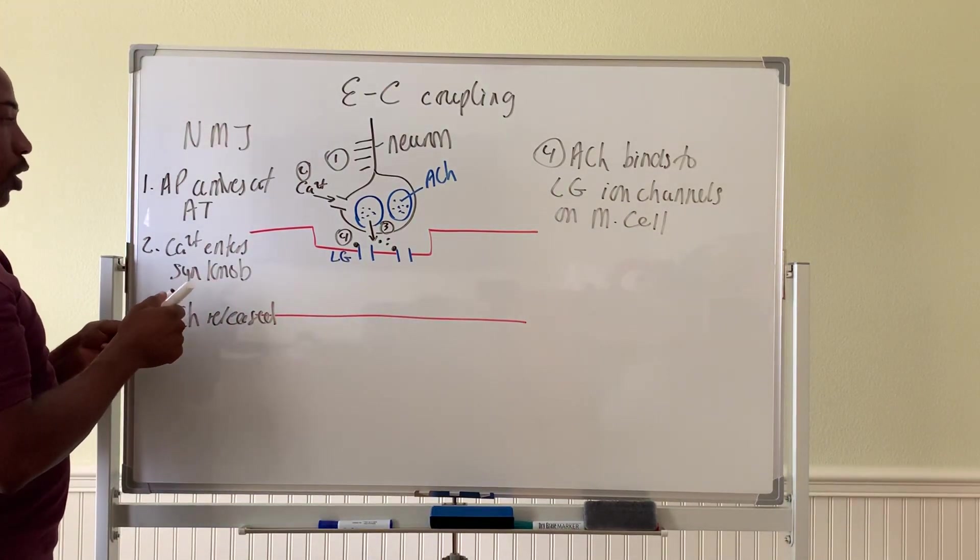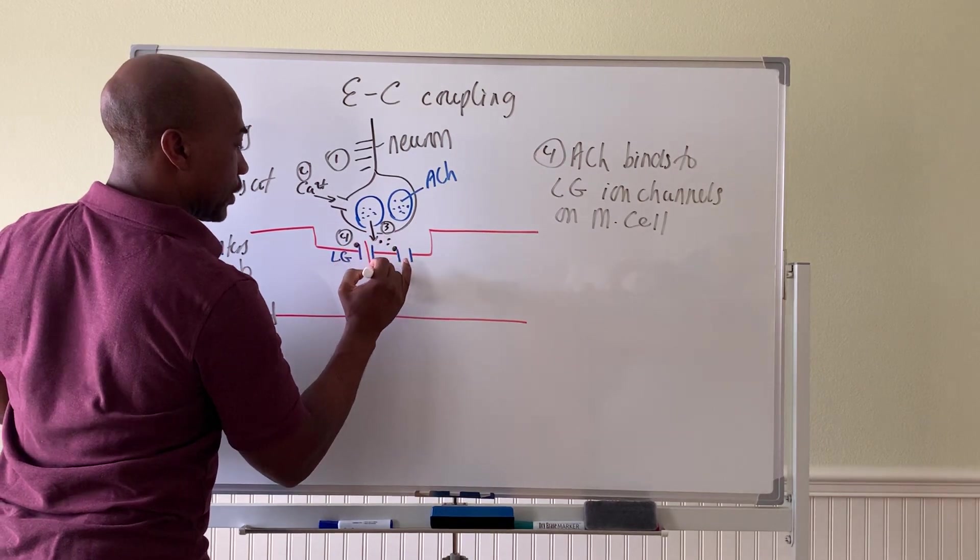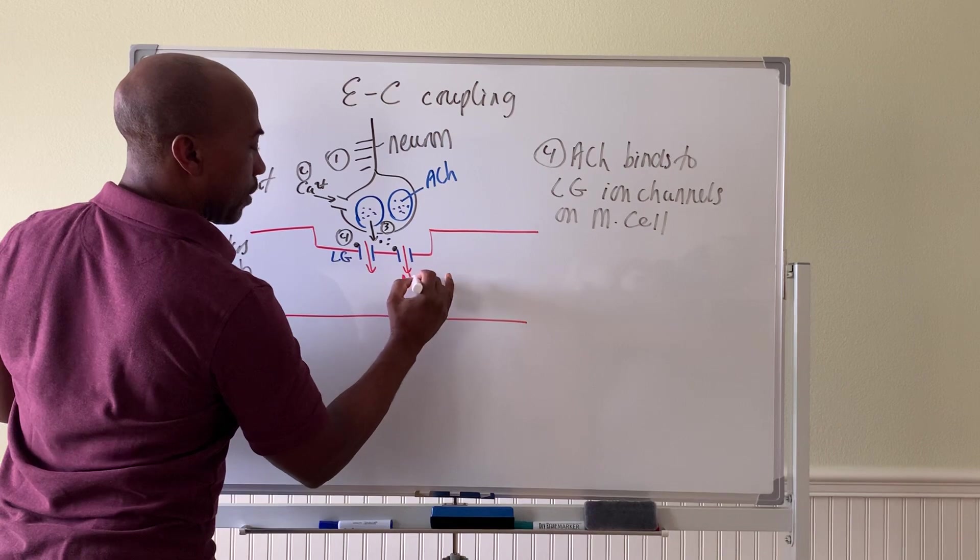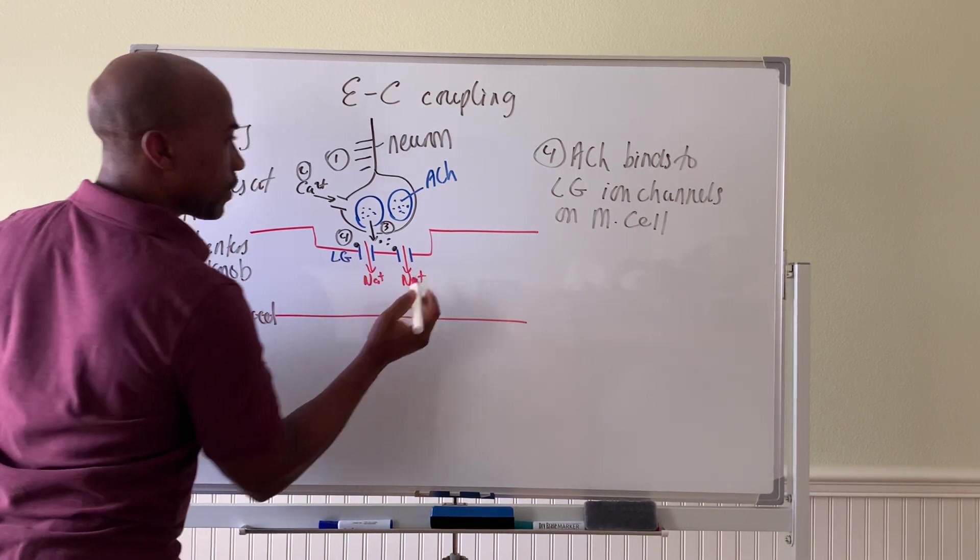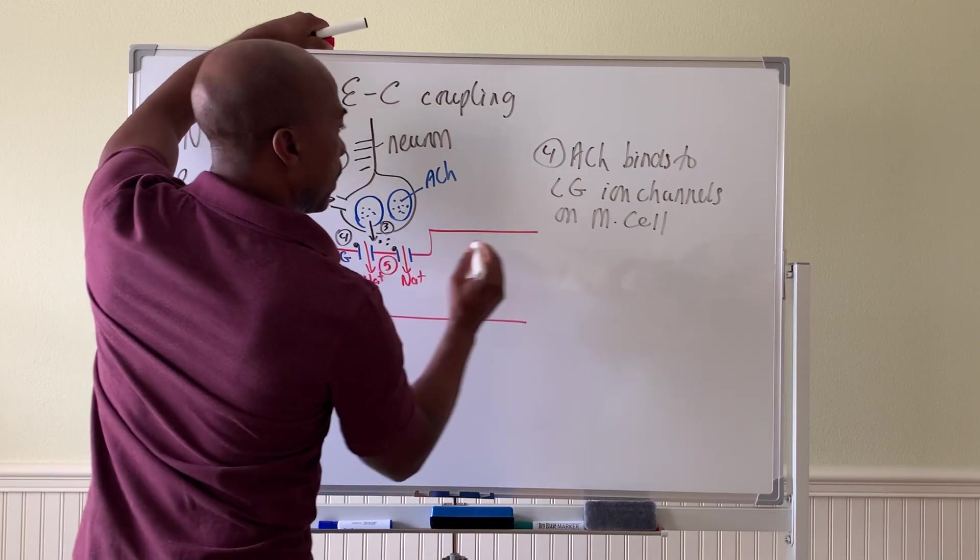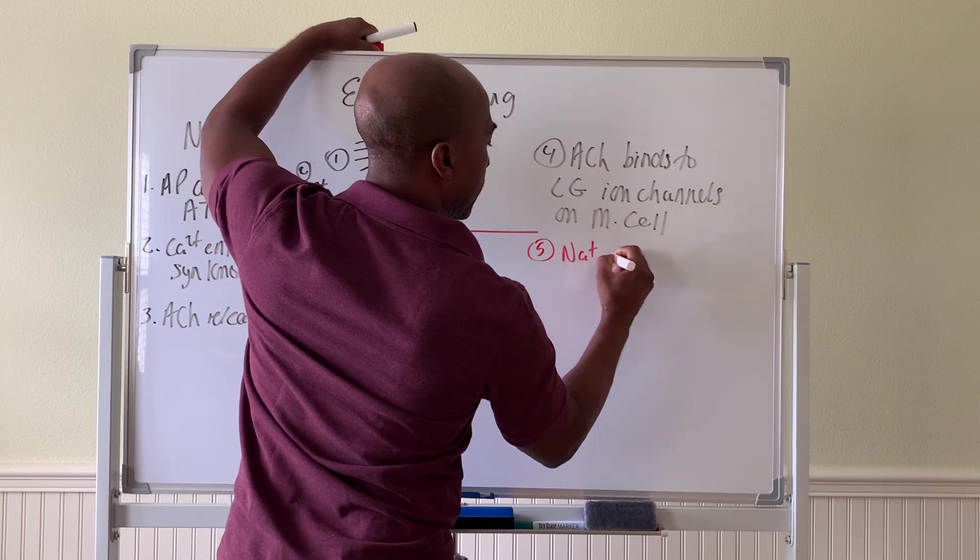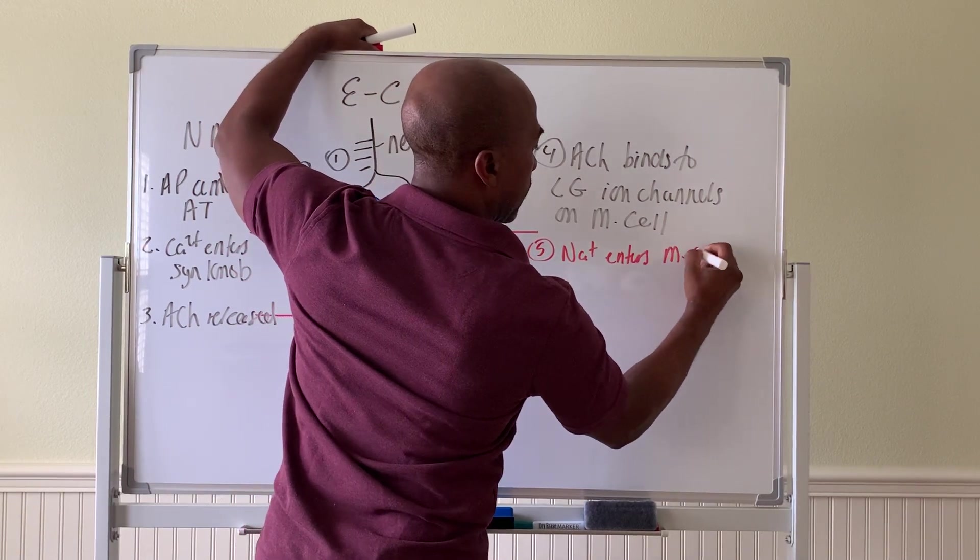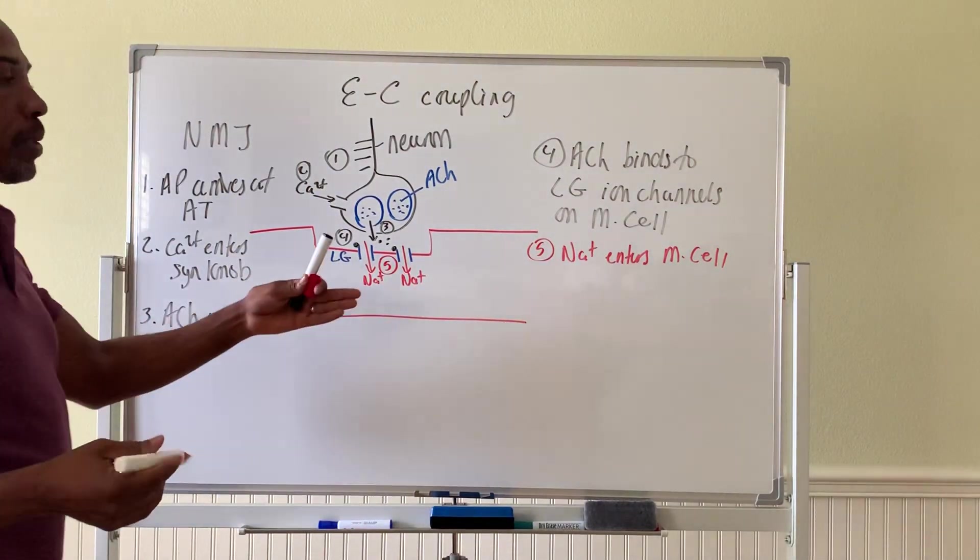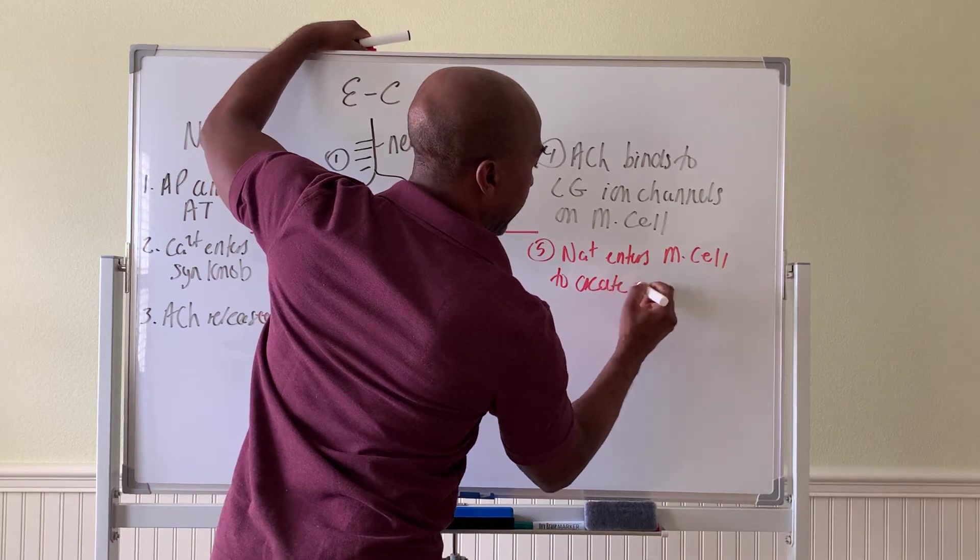And that will cause sodium ions to enter the cell. Now sodium ions enter. Step five, sodium enters the muscle cell, which creates a local potential.